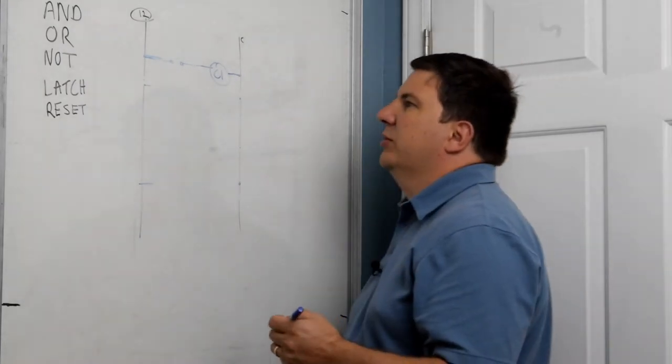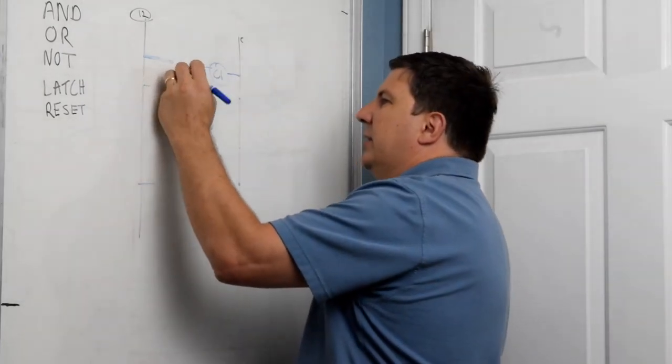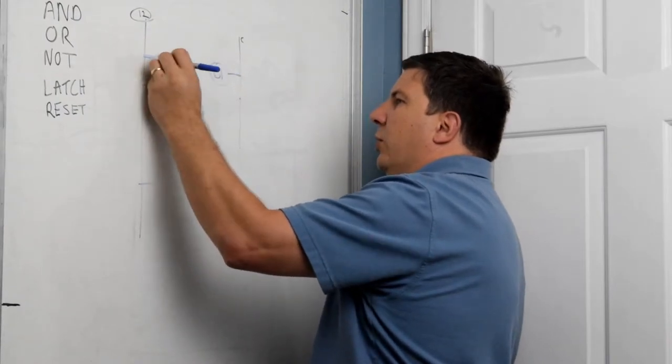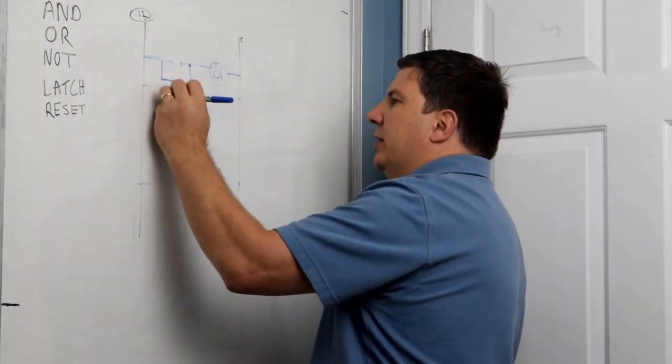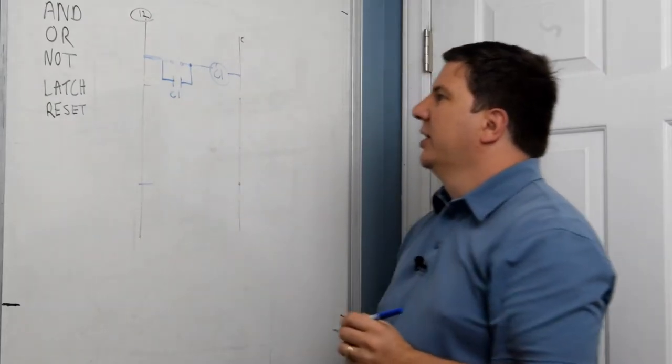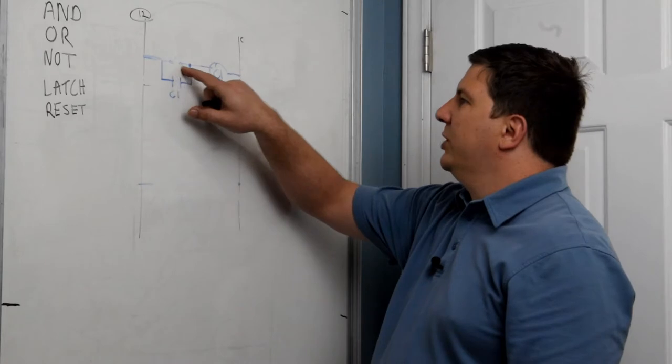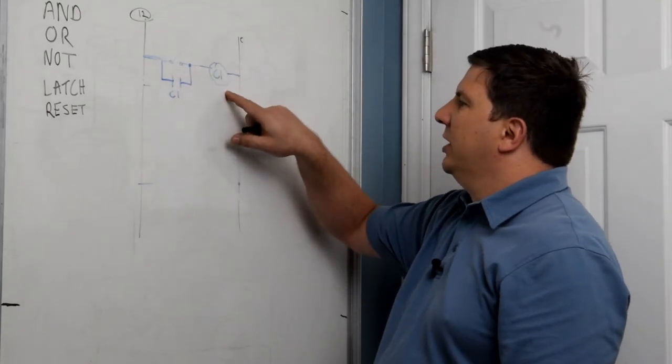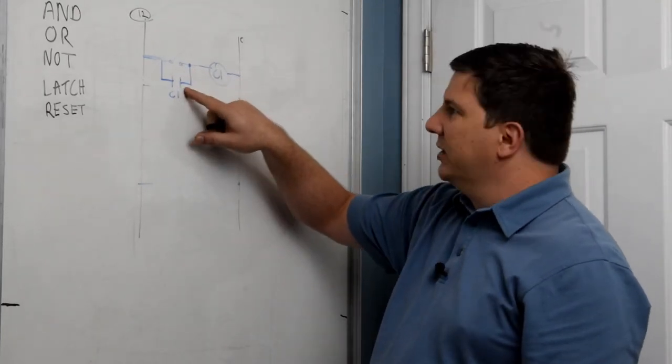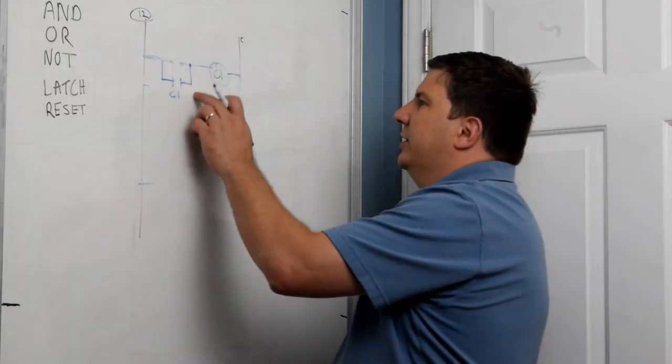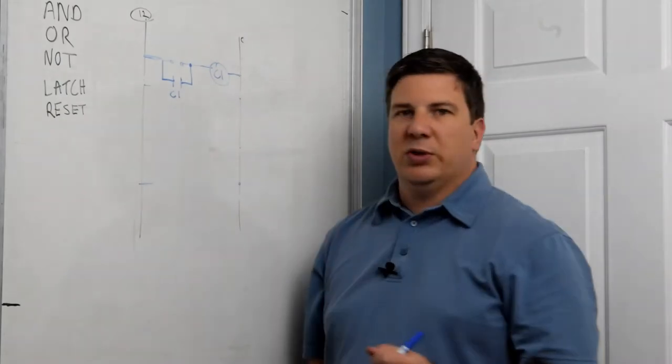So how we do this is we trick it essentially into thinking that somebody's pushing that by taking the first coil of that motor and using that coil to hold the motor back on. So now we have, I switched it on, C1 comes on and this coil energizes. So now I can de-energize this and take my finger off the button and it'll still make a path to keep C1 on.